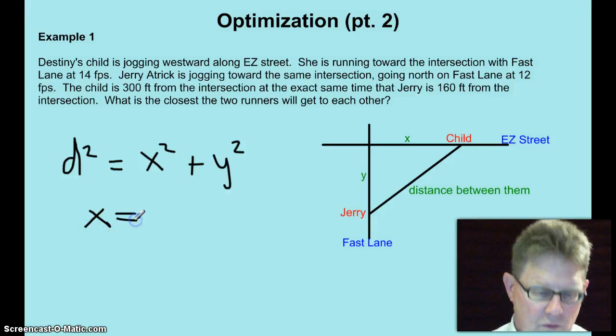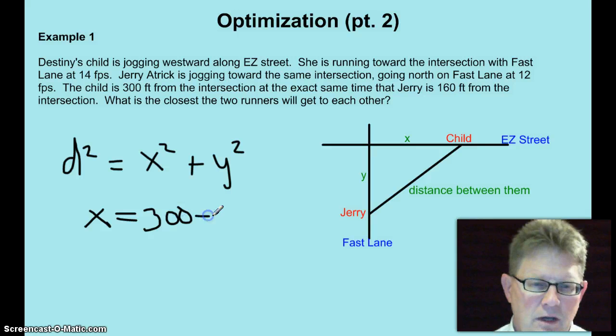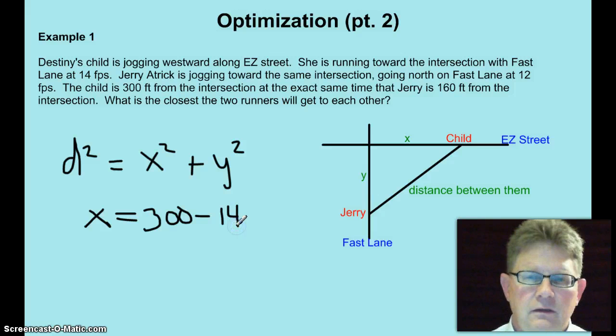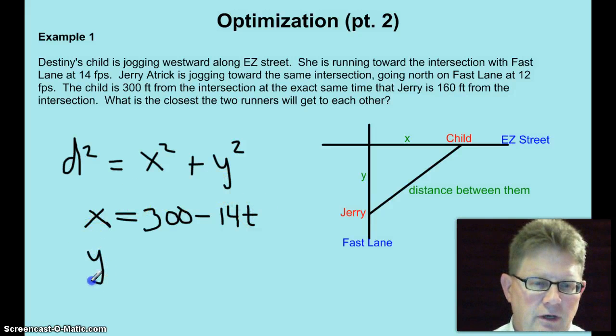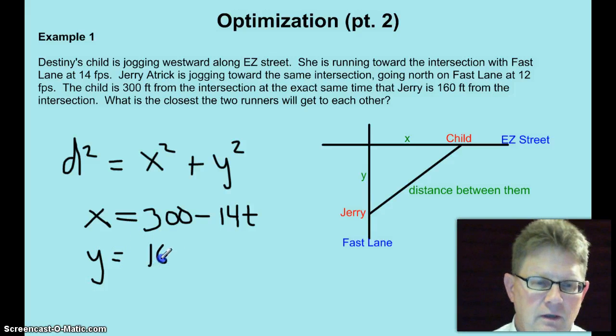Alright, so what is the child's distance from fast lane at any given time? x equals 300 minus 14t, she's moving at 14 feet per second. And then, how about Jerry? He was originally 160 feet away and he's moving at 12 feet per second.